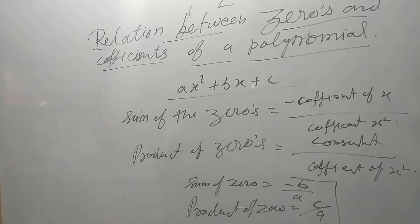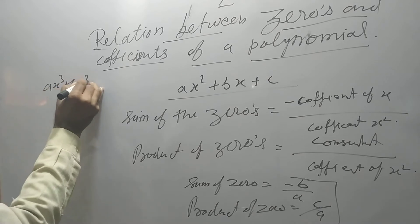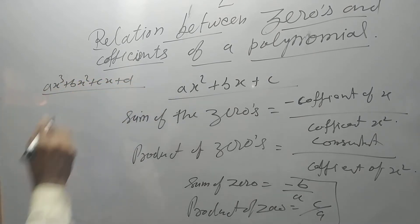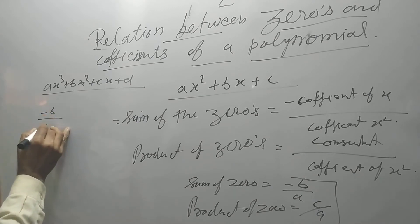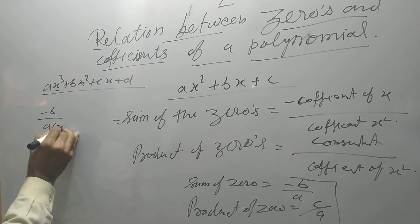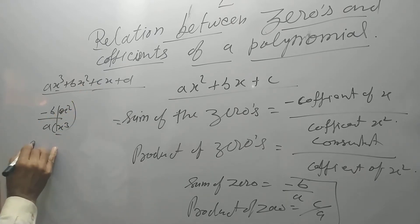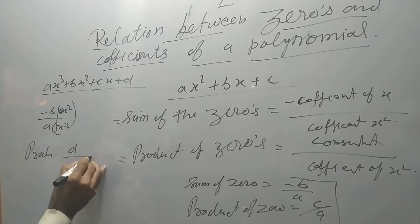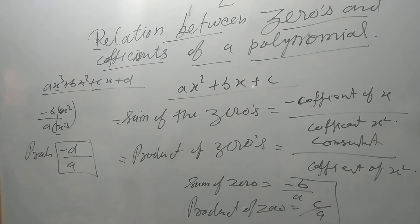Now, if we have taken the cubic equation, then what will happen with the coefficients? The condition will be similar. Take ax³ + bx² + cx + d. Then sum of the zeros is equal to -b divided by coefficient of x³. And secondly, product of zeros is equal to -d/a. This is the condition for the cubic equation.